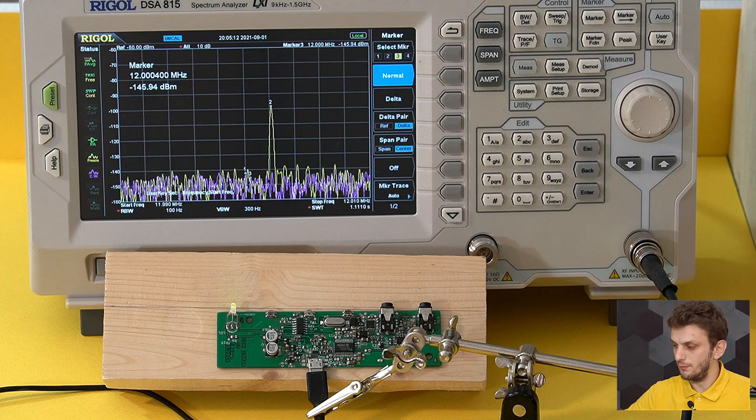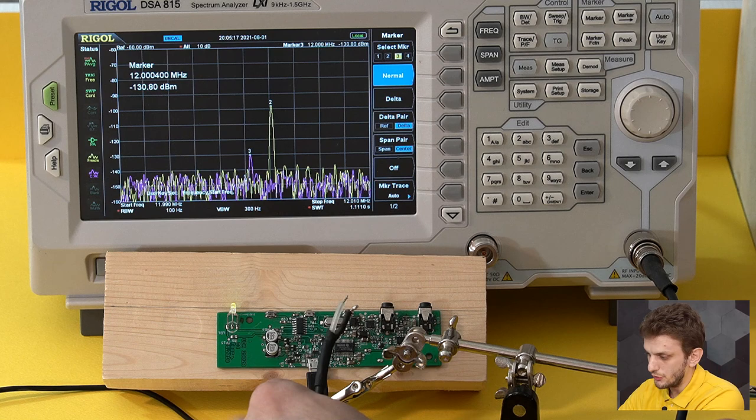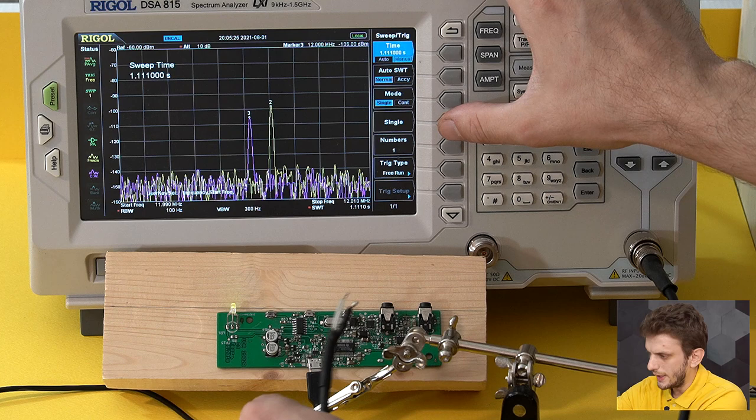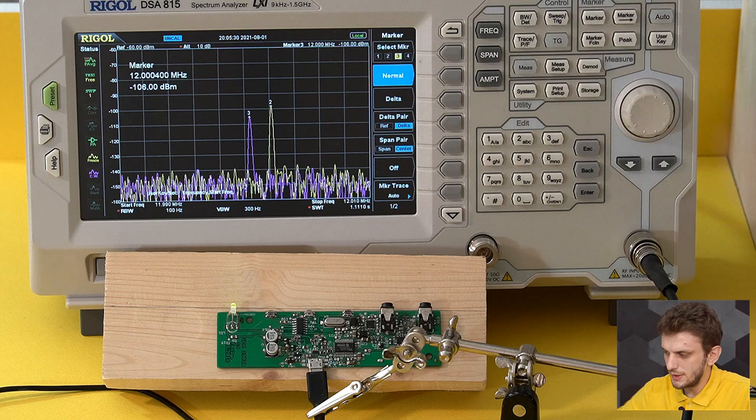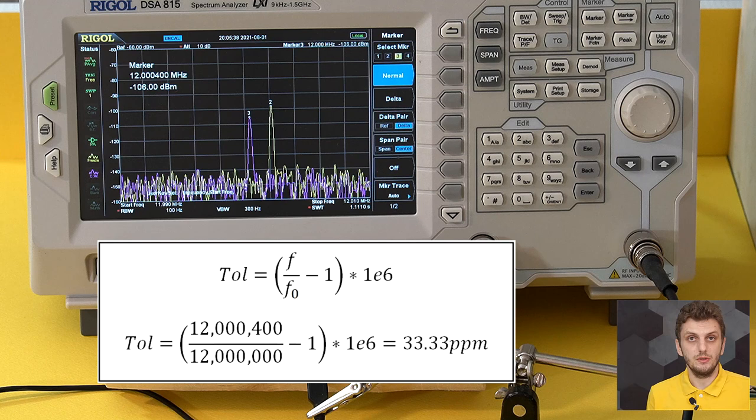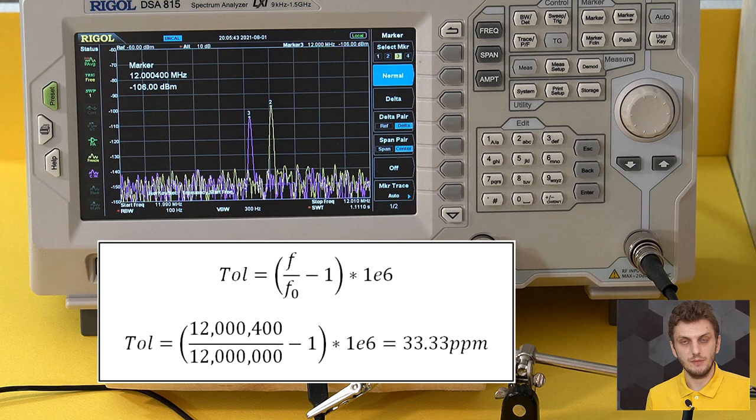Right now the board is running, and if we bring our near-field probe close to it we can see a new spike appearing. Let me just freeze that. If we go with the marker over it, we can see it's at 12.0004 megahertz. If we calculate that, we're at 33.3 parts per million away from the desired frequency. So it's not perfect but we're much closer this time.